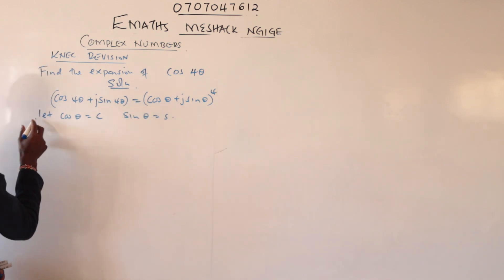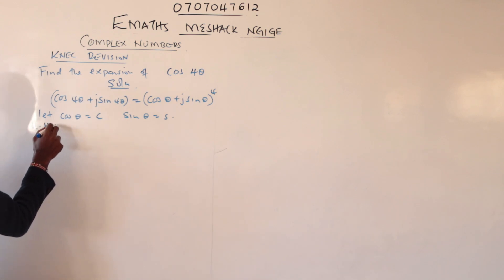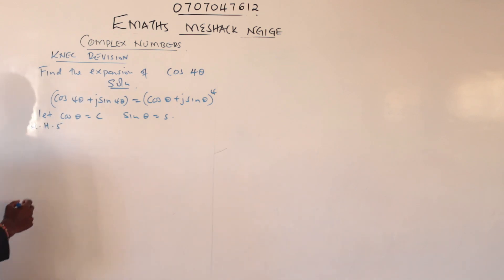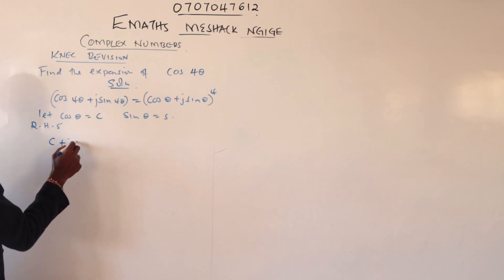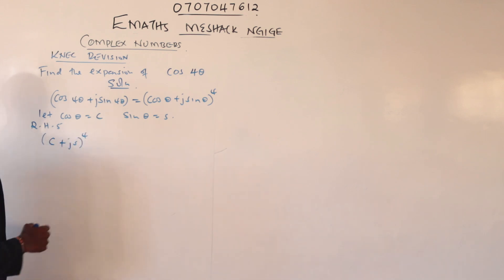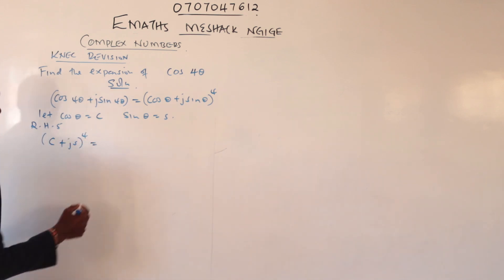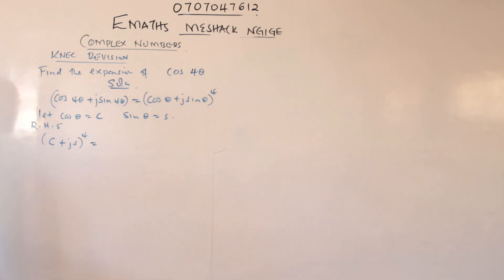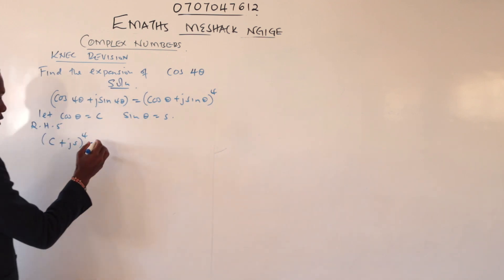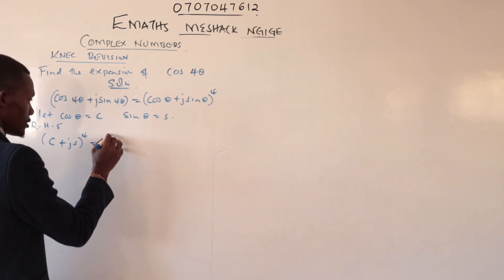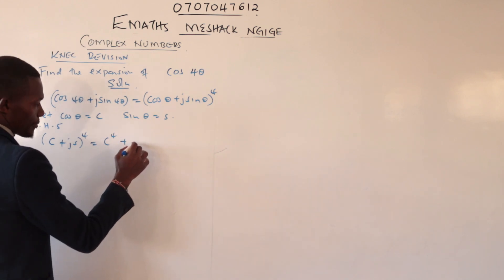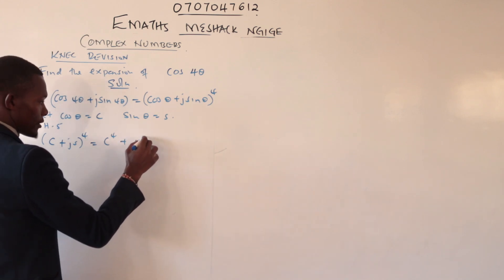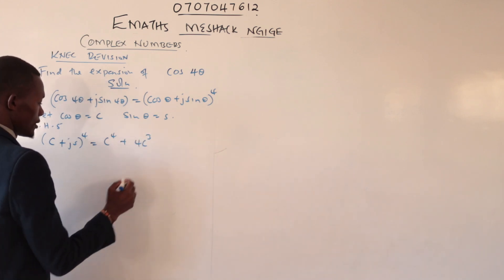Expanding the right-hand side, we shall have (c + js) to the power 4. The procedure is just the same. We will start with c to the power 4, then drop the power and bring in the next term: c to the power 3.